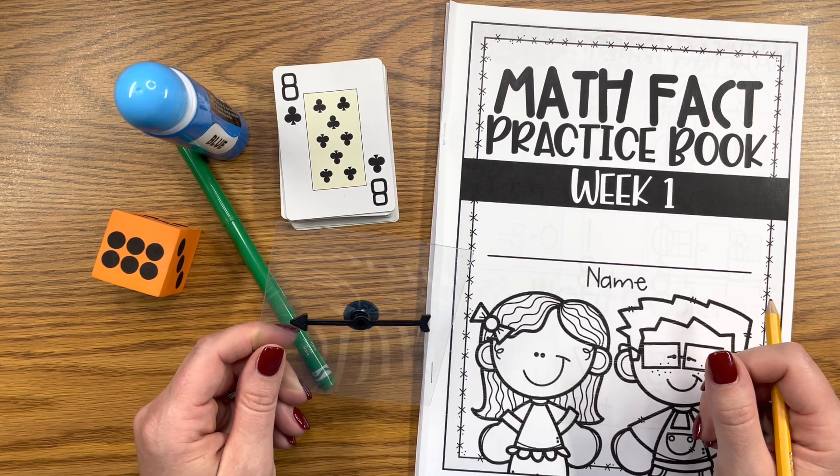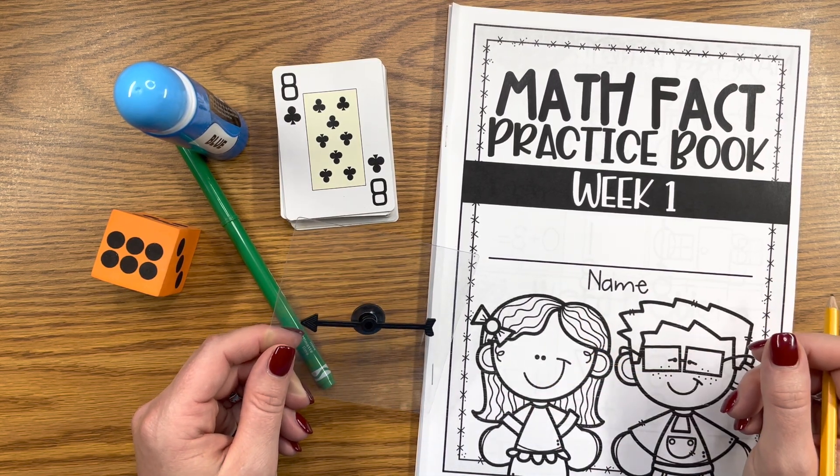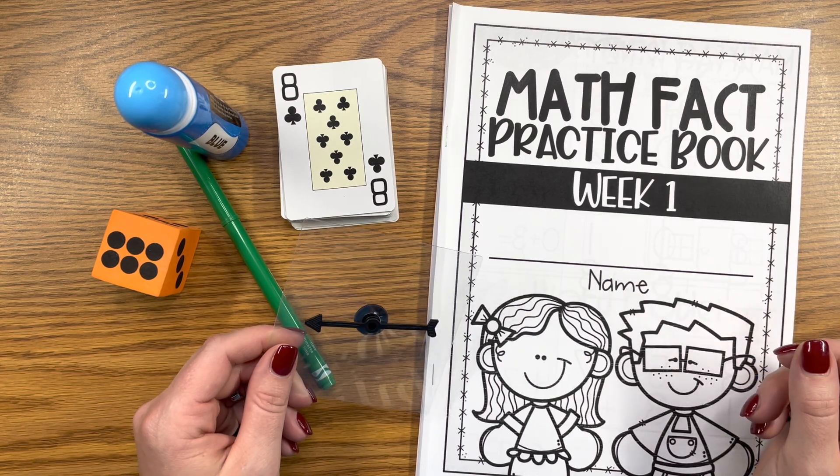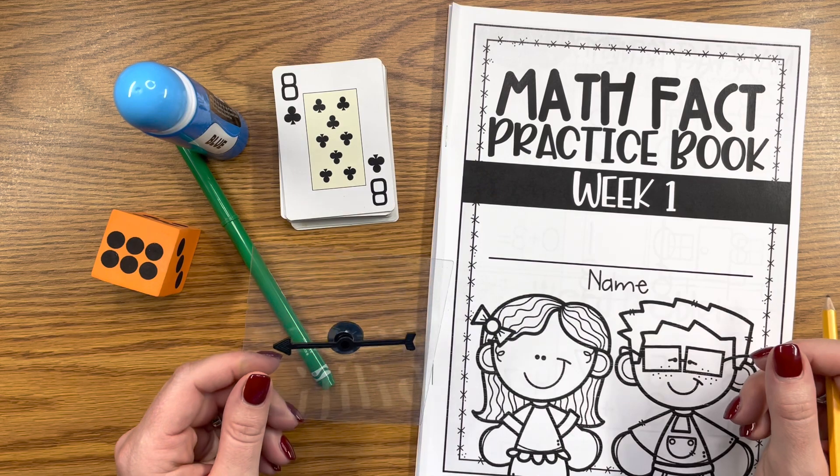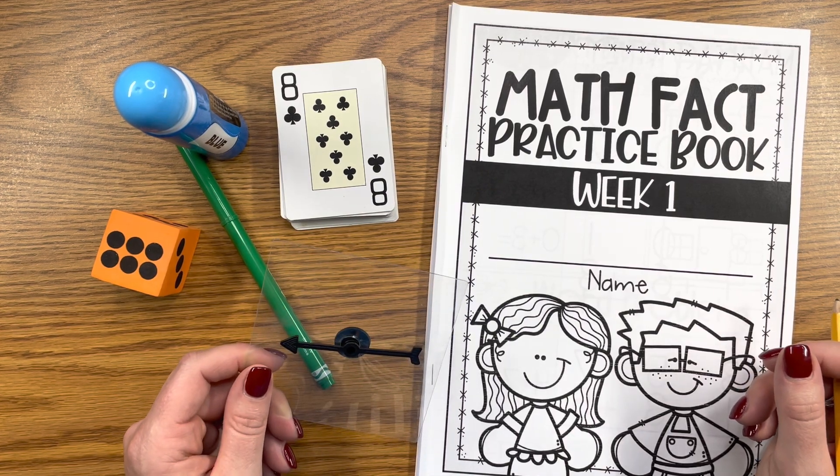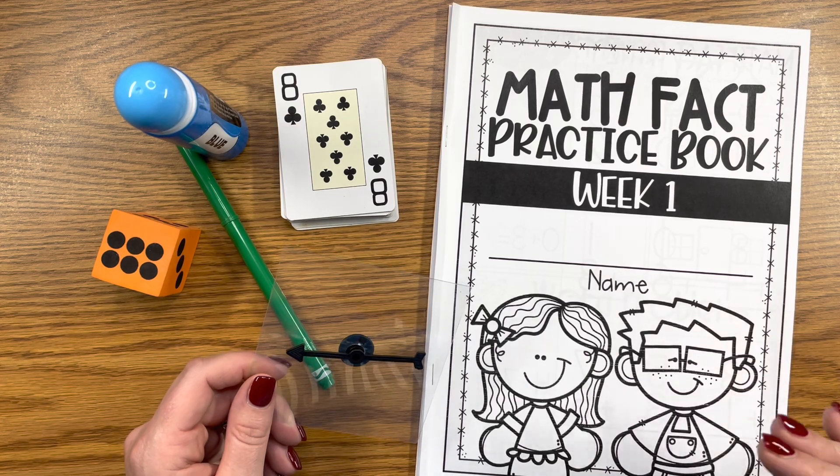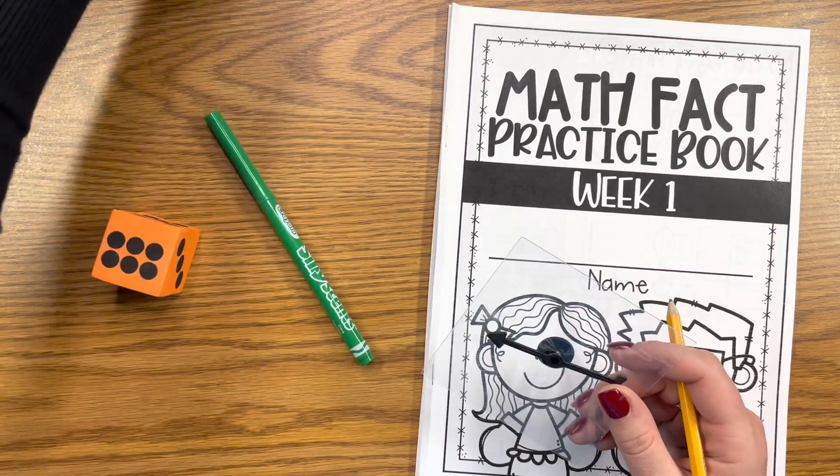Let's take a peek inside my math fact intervention booklet. On the table here you'll see a few materials that I like to keep handy. For this intervention I just have a basket where I have decks of cards, foam dice, spinners, markers, and bingo daubers. I keep those there all the time so that whatever day we happen to be doing in the book, our materials are there.